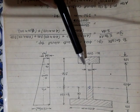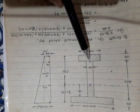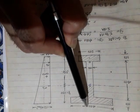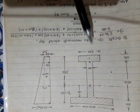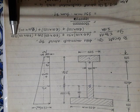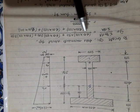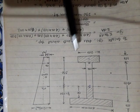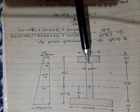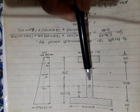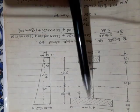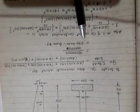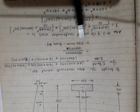For the bottom flange: the area is 200 mm × 100 mm, and the lever arm from its centroid to the top is 550 mm. Dividing the sum of (area × lever arm) by the total area (sum of all three areas) gives y-bar equal to 250 mm from the top.